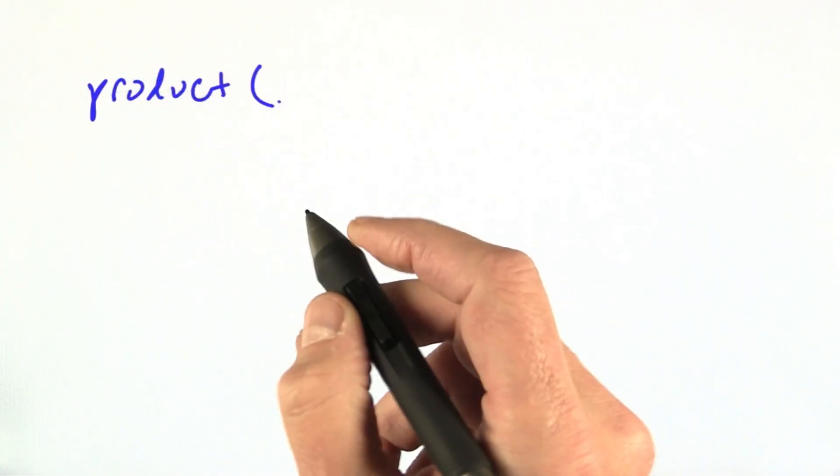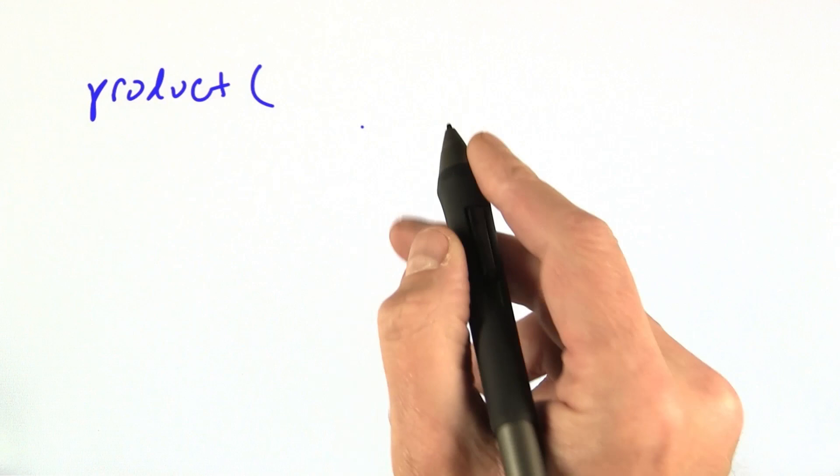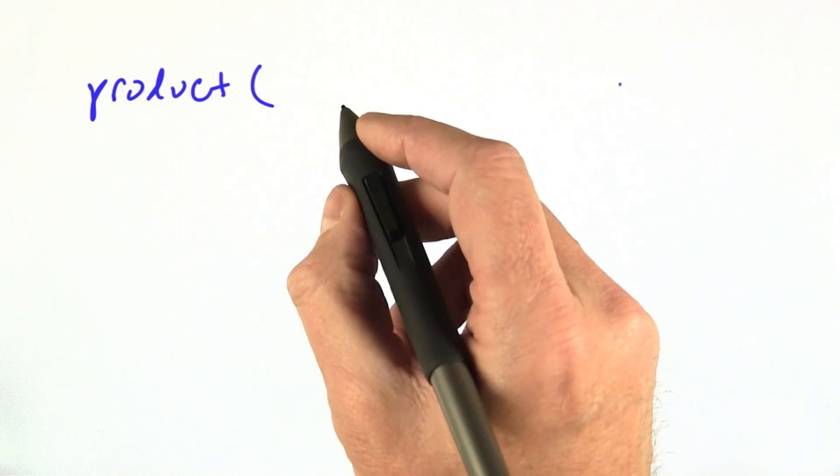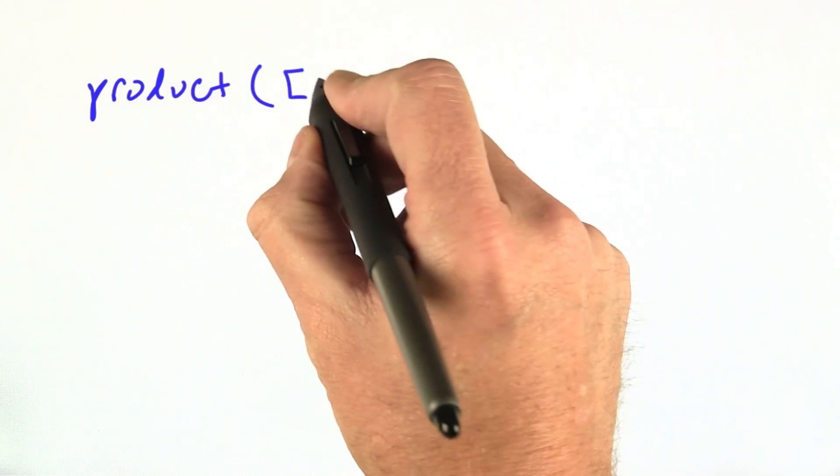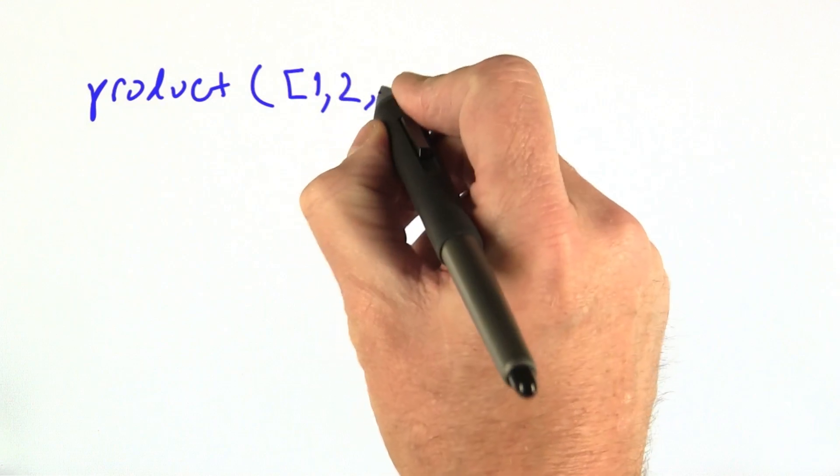The product function takes any number of lists. In fact, they can be iterables. Here, we're just going to try 2.